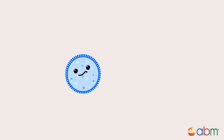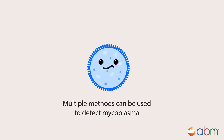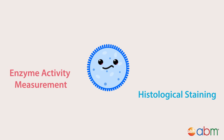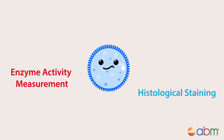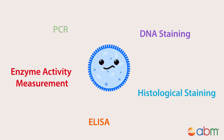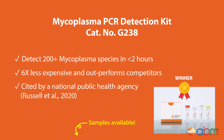Luckily, there are multiple methods that can be used to detect mycoplasma, which includes histological staining, enzyme activity measurements, ELISA, DNA staining, and PCR. ABM provides a quick and efficient mycoplasma PCR detection kit that is capable of detecting over 200 strains of mycoplasma within a few hours.